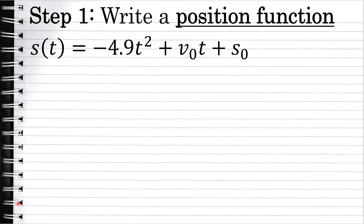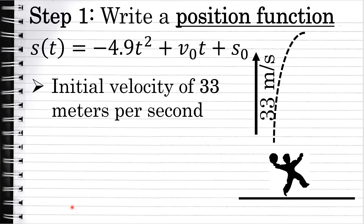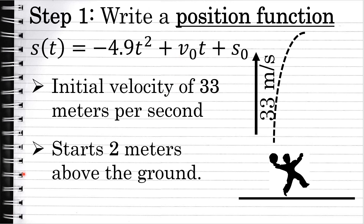In this problem, we've been given some information that will allow us to complete this position function. We were told that the initial velocity of the object was 33 meters per second — when the ball left the thrower's hand, it was traveling at 33 meters per second. That's the initial velocity. The ball started 2 meters above the ground; this is the initial position, s sub 0.